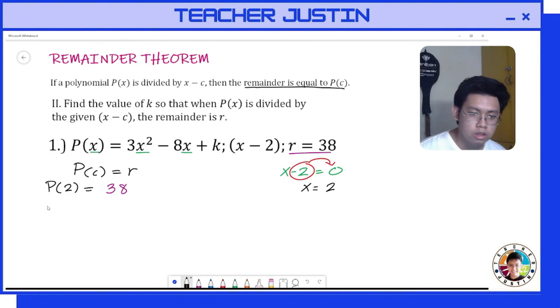Giving us 3 times 2² minus 8 times 2 plus k equals our remainder, which is 38. Then let's solve for the value of k by simplifying our equation. Let's start first with our exponent.